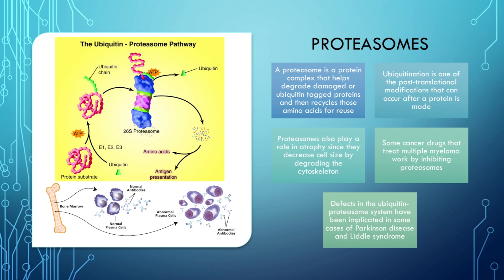Since proteasomes break things down, it also makes sense that they play a role in atrophy by decreasing cell size through degrading the cytoskeleton. The cytoskeleton is a structure that gives the cell its shape — essentially like our bones — in that it helps cells maintain their shape and internal organization. So if it's broken down, the cell will get smaller, which is called atrophy.